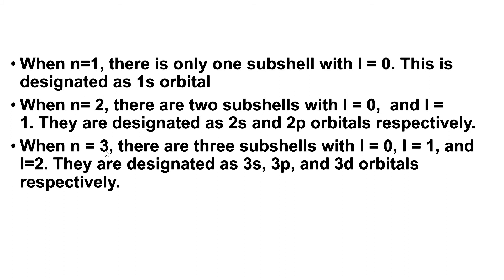When N=3, there are three subshells with l values 0, 1, and 2 — since 3 minus 1 equals 2. So l goes from 0 to 2. These are designated as the 3s, 3p, and 3d orbitals respectively.